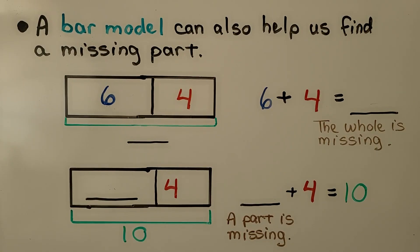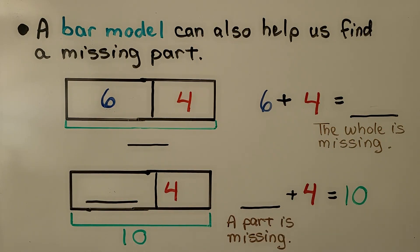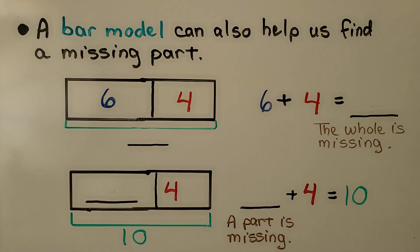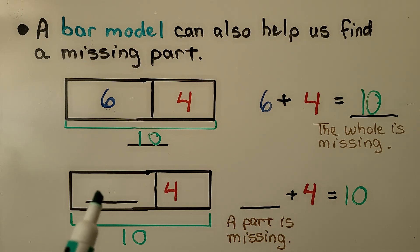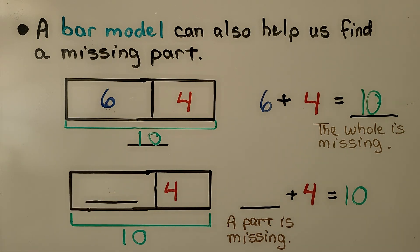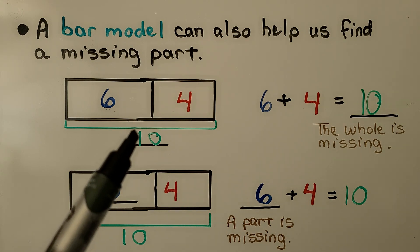A bar model can also help us find a missing part. Here the missing part is the sum — it's the whole. We have 6 and 4. Together they equal 10. Now on the bar model, we've got one of the parts missing — one of the addends missing. Something plus 4 is equal to 10; it must be 6. So we had a part missing here, and we had the whole missing here. We had an addend missing; we had the sum missing.